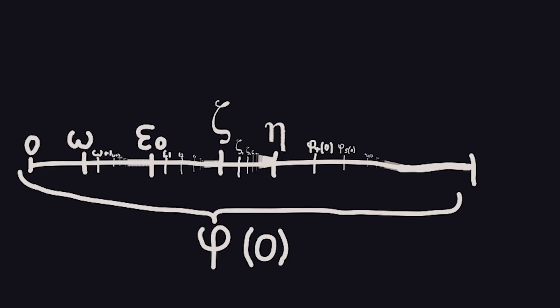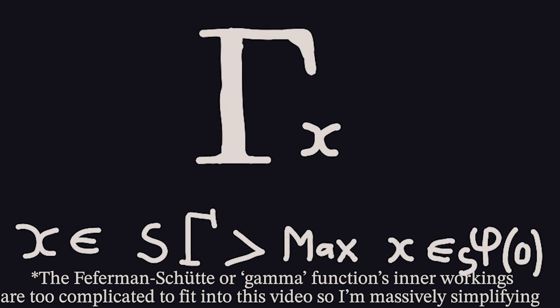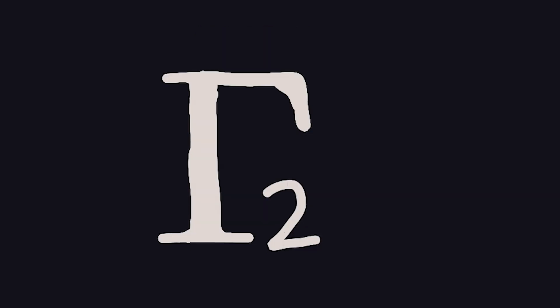But after the Feferman-Schütte ordinal, we hit a wall — we can't go any larger, because it is the final destination of our phi function. We've already nested infinitely. Is this the end of the ordinal infinities? No. All we need to do is invent a new function: the Feferman-Schütte function, which works by finding more and more ordinals unreachable by phi. With this we can grow more and more. But eventually we've hit another roadblock and our function has run out again. Rather than make a new function every single time, we can make a function that goes much, much higher — called the multivariable Veblen hierarchy.